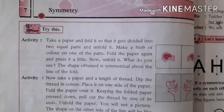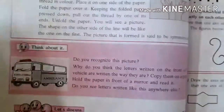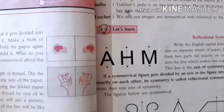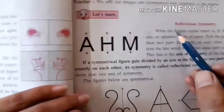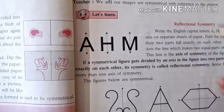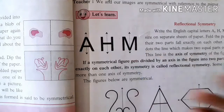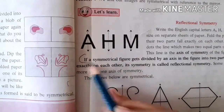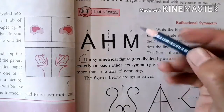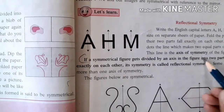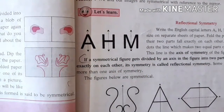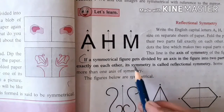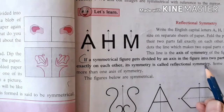So let's start with the lesson. Symmetry is a lesson we had last year also. What does symmetry mean? Symmetry means that whichever diagram, alphabet, or number can have a reflection symmetry is known to be a symmetrical figure. If a symmetrical figure gets divided by an axis into two equal parts, and the two parts are similar to each other and fall exactly on each other, it is called reflectional symmetry.